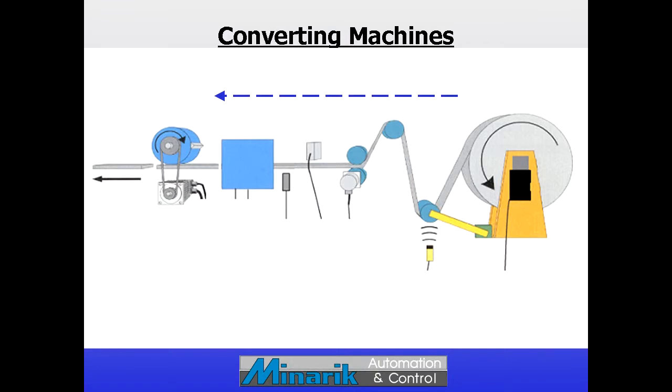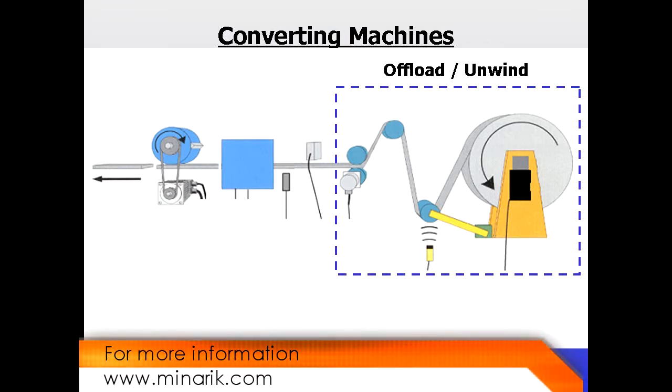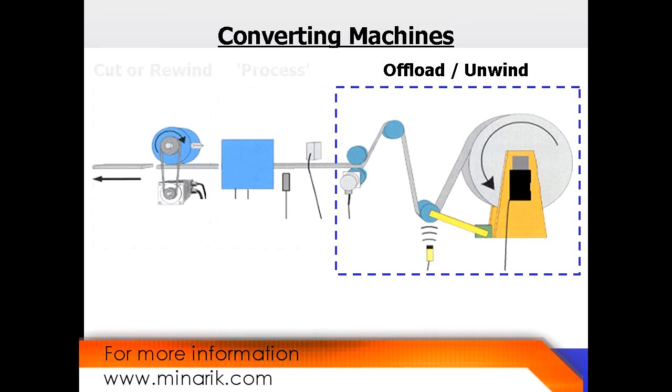In part one, we saw that converting often begins with the offload of material from a bulk roll, rotated by AC or DC motors.